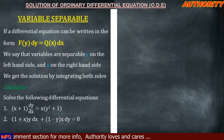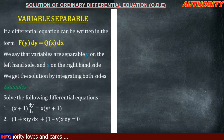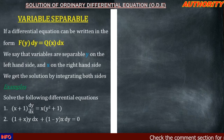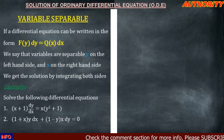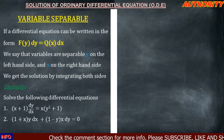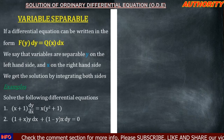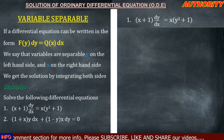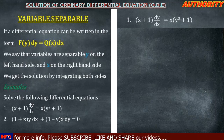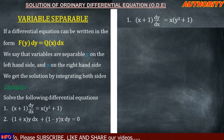Solve the following differential equations. Number one: (x + 1) dy/dx = x(y² + 1). Number two: (1 + x)y dx + (1 − y)x dy = 0. We are going to solve these ordinary differential equations using separation of variables. For number one, we have (x + 1) dy/dx = x(y² + 1), and we want to separate these variables.